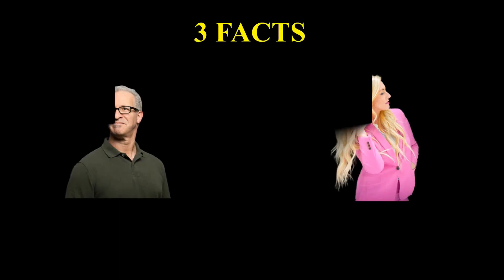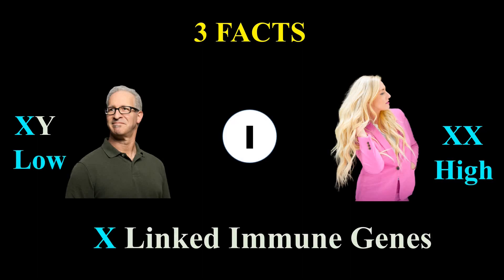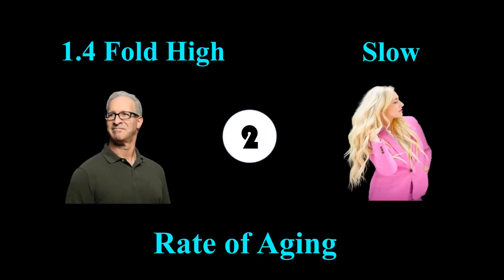Let's talk about the three main immune-level differences. First, males have only one X chromosome, while females have two X chromosomes. This means that gene expression of immune-related genes present on the X chromosome is higher in females than in males.